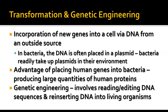Both of those processes are used a lot in transformation and in genetic engineering. Transformation is when you put new genes into a cell via DNA from some other source. In bacteria, we often put the DNA in a plasmid — bacteria easily pick up plasmids in their environment — and that allows us to engineer bacteria to do certain tasks. Putting a human gene into bacteria lets us make a large quantity of human proteins much more easily than harvesting them from individual people. Genetic engineering involves reading and editing DNA sequences and then reinserting DNA into living organisms.